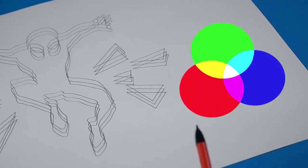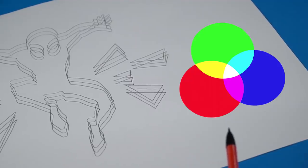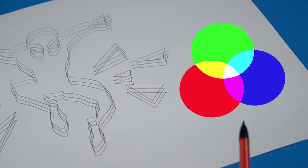Alright, so these are our primary colors: red, blue, and green. And when we get these colors, we get cyan, magenta, and yellow. And when we get these colors mixed, we get white, as you can see here.